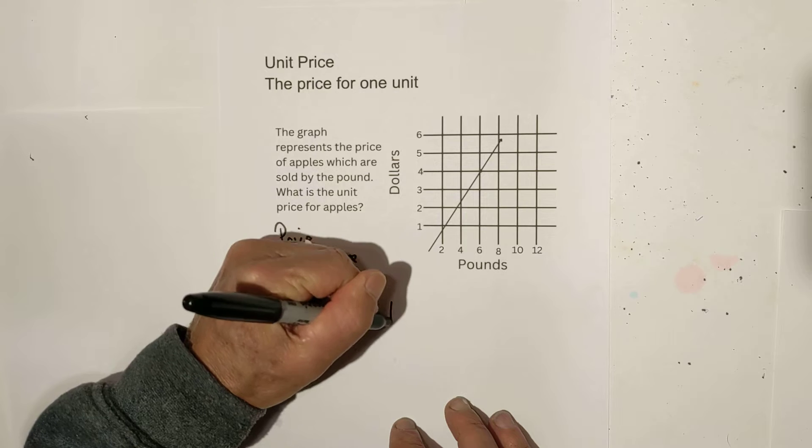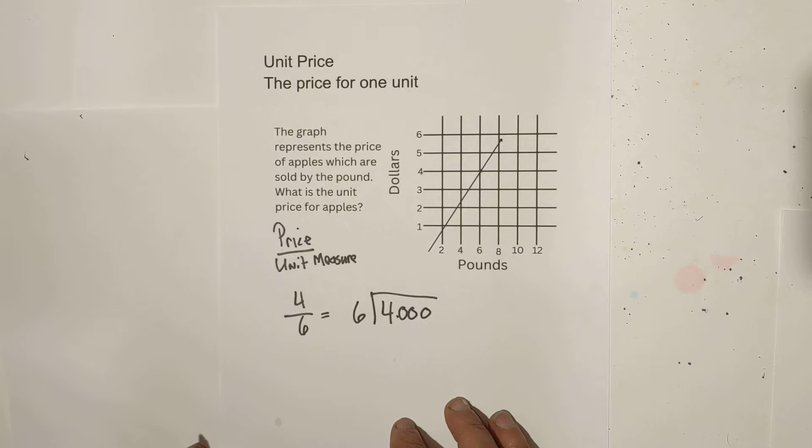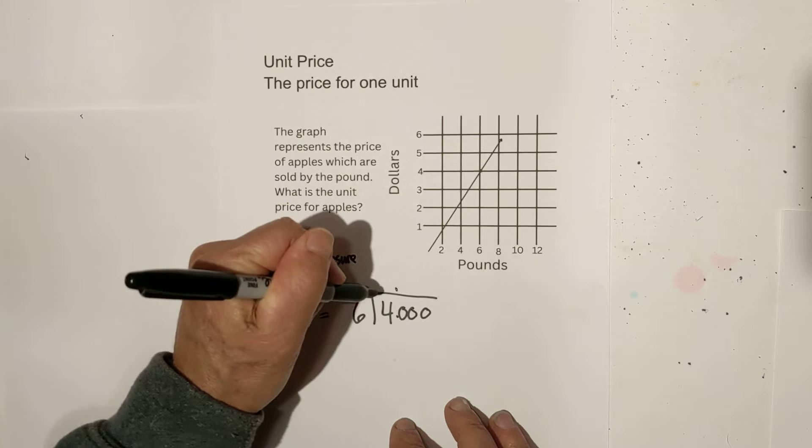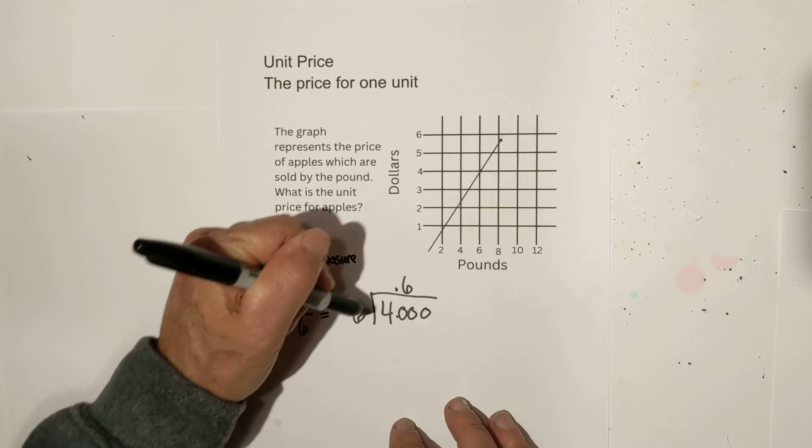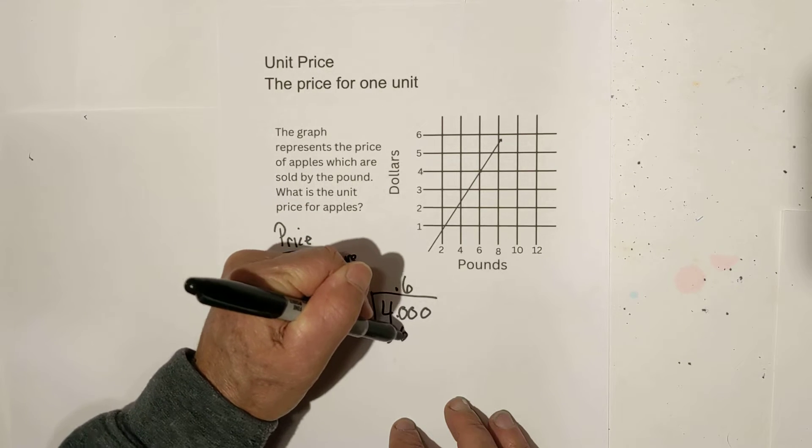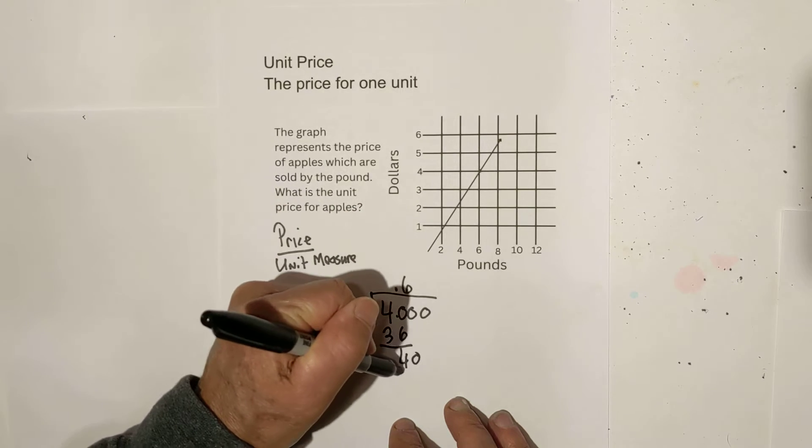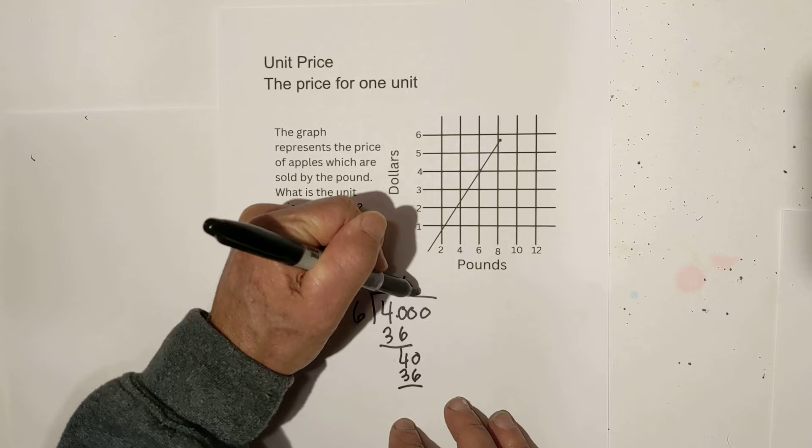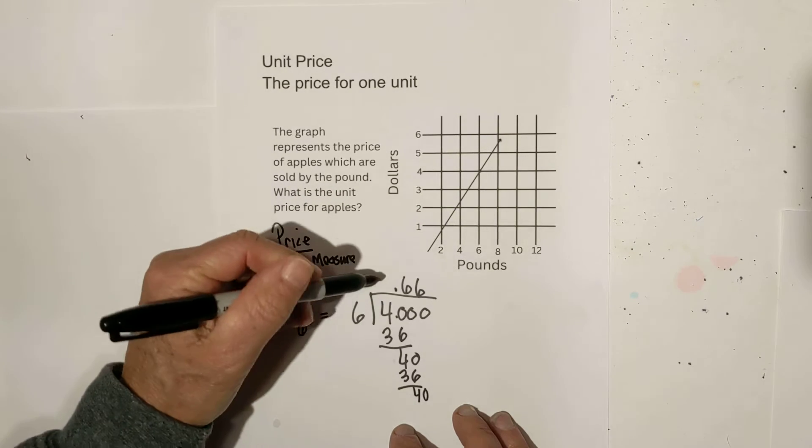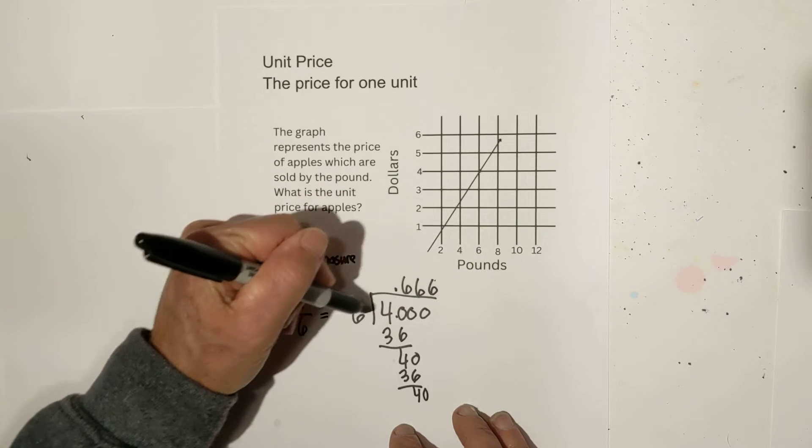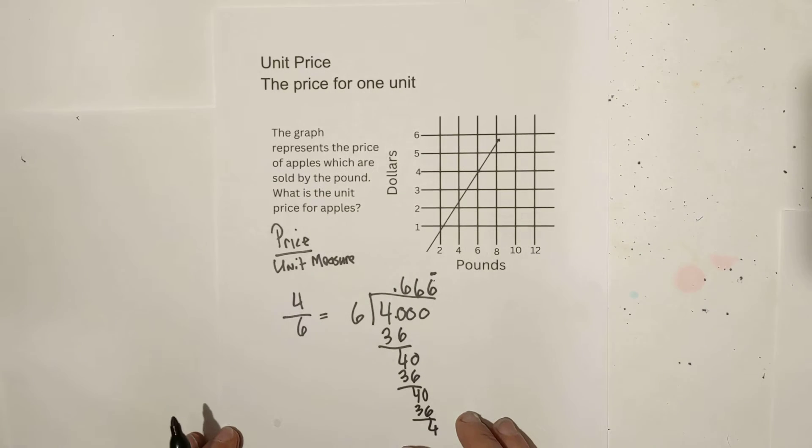So now all we do is divide four by six. Bring up the decimal. Six will not go into four, but it will go into 40 six times. Six times six is 36. Subtract, we have 40 again. Six times six is 36. Subtract, bring down the zero, and we have the same thing. Six times six is 36. So it looks like we have a repeating decimal.